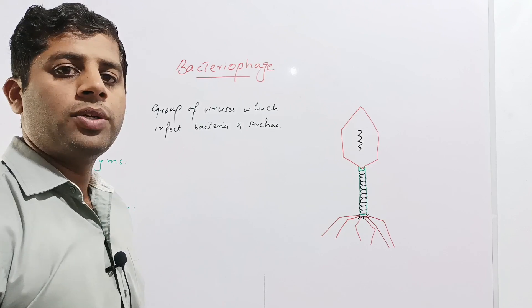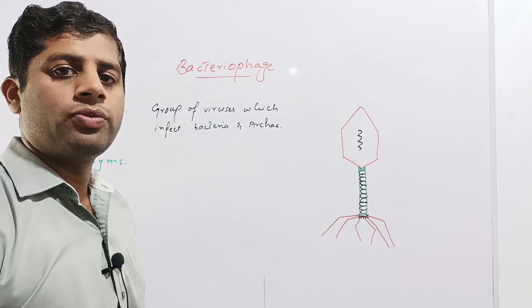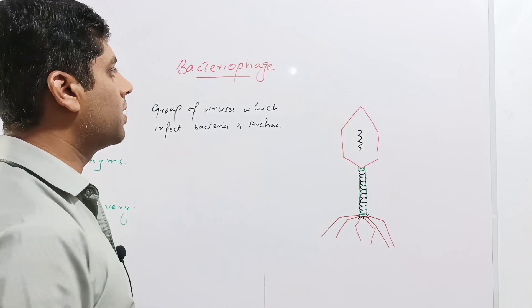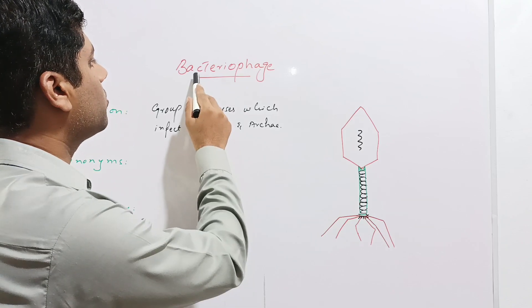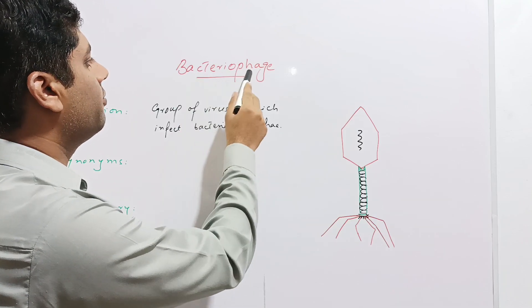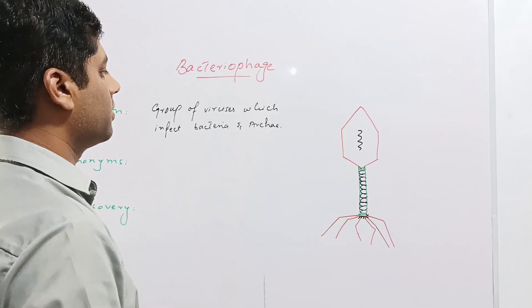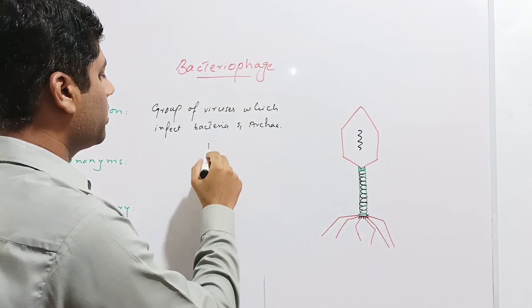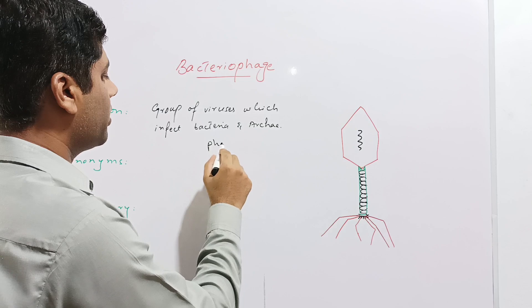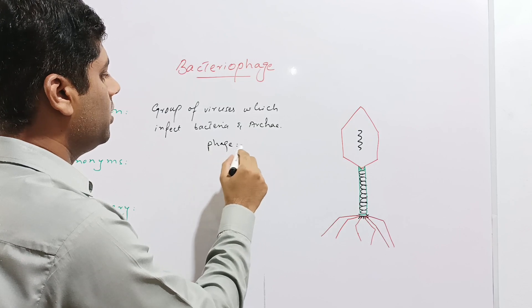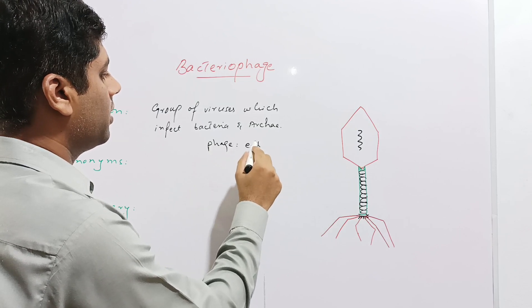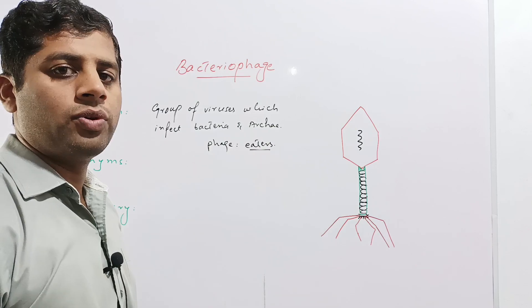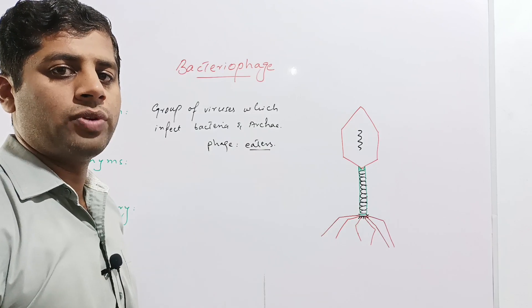The term bacteriophage is composed of two words. 'Bacterio' refers to the bacteria and 'phage' means eater. So these are the phages or viruses which eat away the bacteria. Therefore, these are called Bacteriophage.